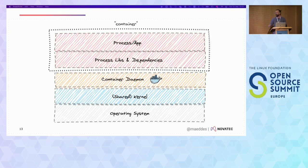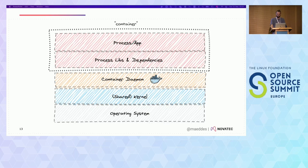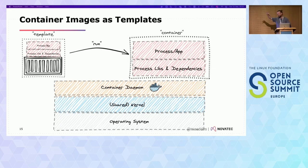If you use a certain container daemon, it's basically a process or server application that handles all those things — namespaces, chroot, and cgroups — under the cover, so you don't have to worry about it and have a neat API to handle them. Container images are basically the templates or blueprints that you use to instantiate and run containers. The container daemon loads those images from various repositories and starts the container of whatever is in the image.